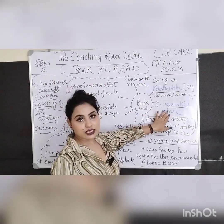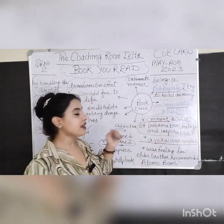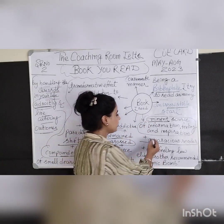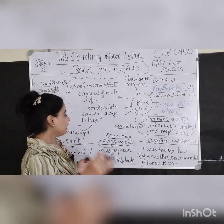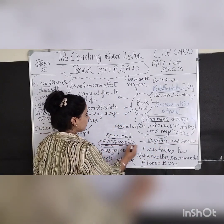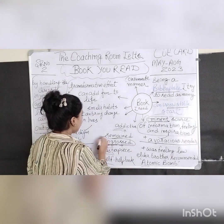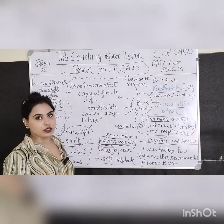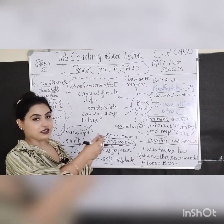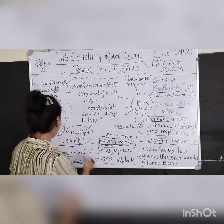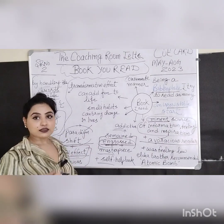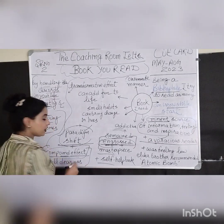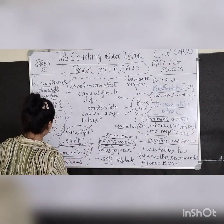Let's review the vocabulary: bibliophile and 'irresistible start' are easy to learn. 'Eminent source' is not that difficult. 'Voracious reader' is also fine. You can say 'involved,' which is quite okay, or you can add 'engrossed.' After that, we discussed paradigm shift — a life-changing event or a sudden positive change in your life. Compound effect means a drastic or major change. Transformative effect means a transformation, which is also a change.